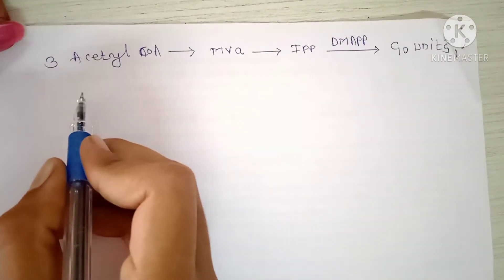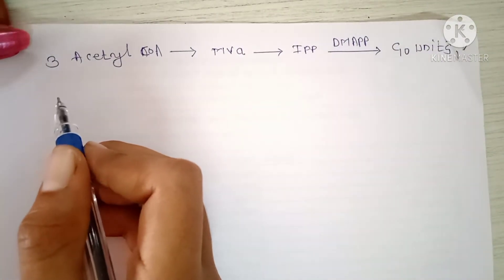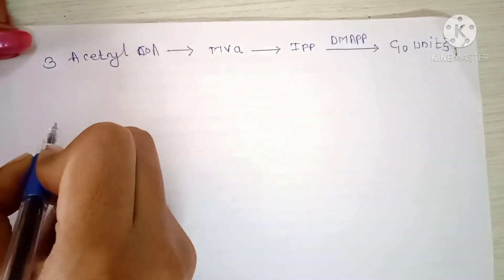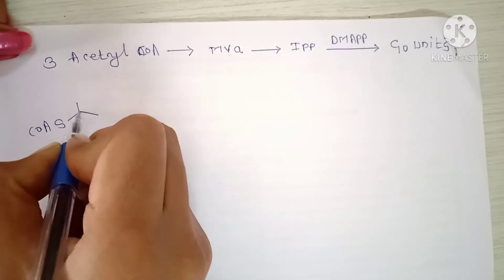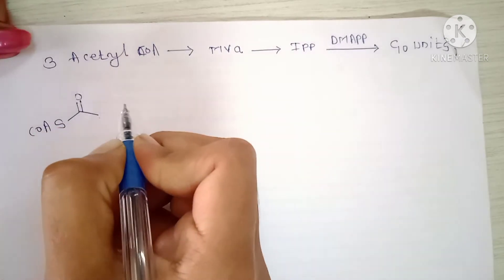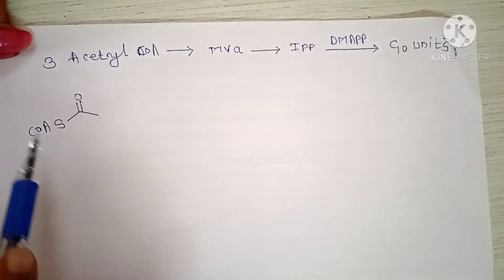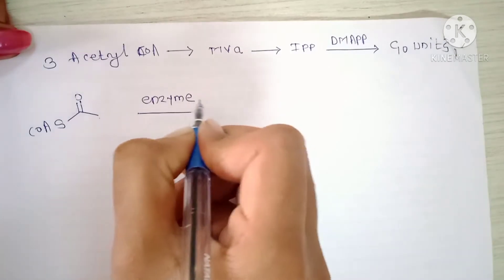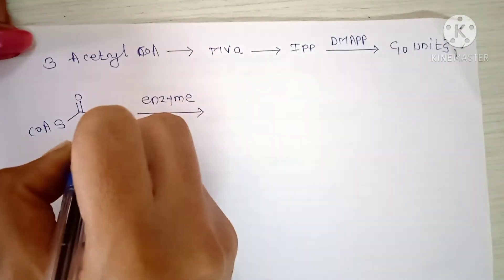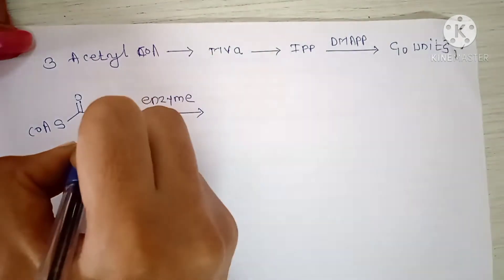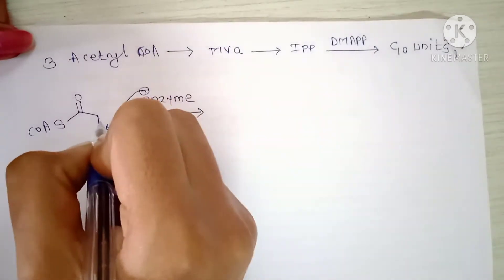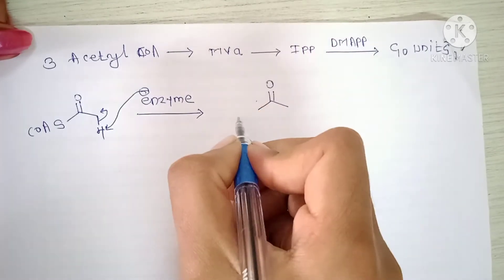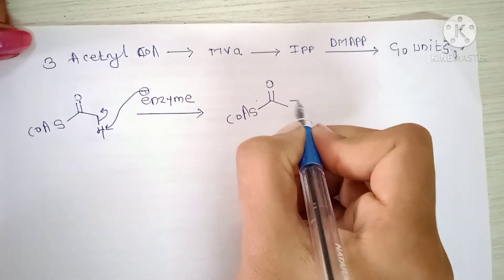Now we will discuss the synthesis in reaction mechanism terms. The structure of acetyl coenzyme A is S-CoA–C(=O)–CH3. One mole of acetyl coenzyme A, in the presence of an enzyme acting as a base, abstracts a hydrogen and forms a negative charge: C(=O)–CH3, C(=O)–S-CoA with a negative charge.